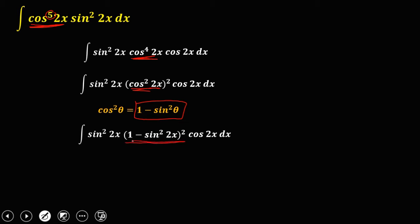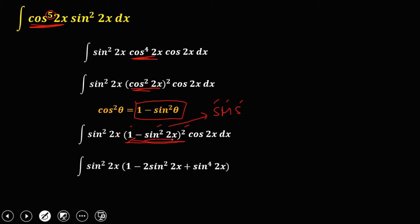Now expand this expression using the SMS method — square of the first, multiplication, square of the last. The square of 1 is 1. Then 2 times negative sine squared 2x times 1 gives negative 2 sine squared 2x. The square of sine squared 2x is sine to the power 4 of 2x. Bring down cosine 2x dx.